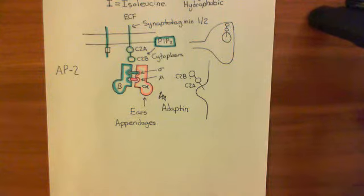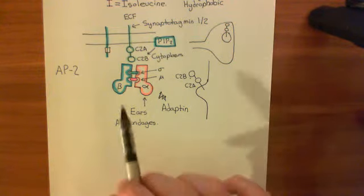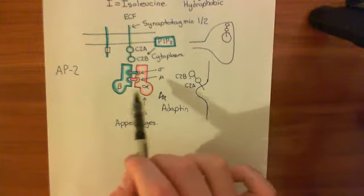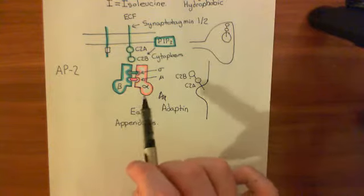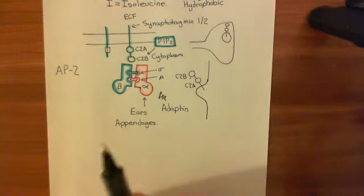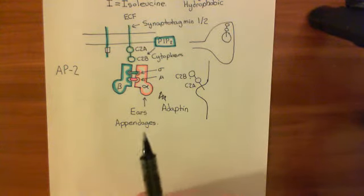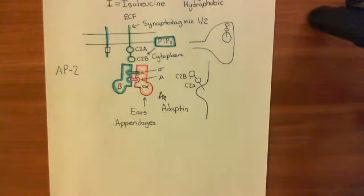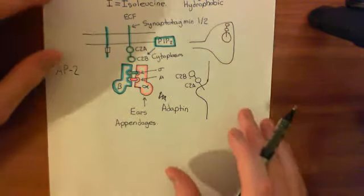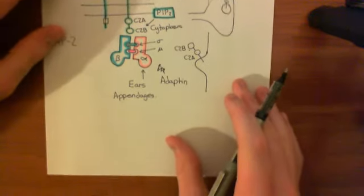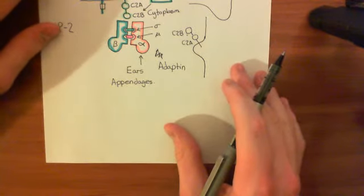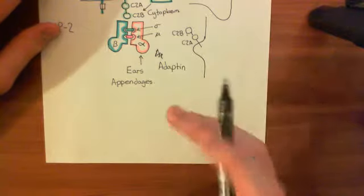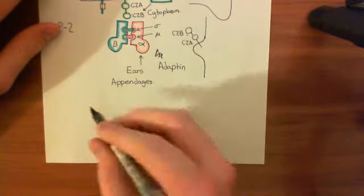What is now going to happen is that these appendages of the adaptor protein are going to interact with the protein clathrin. So let's now introduce the protein clathrin. Clathrin is often compared to a leg, basically. It has these three major portions: here's one, here's two, and here's a third.